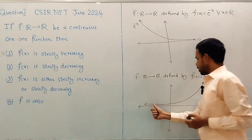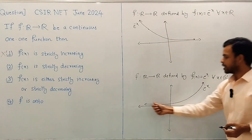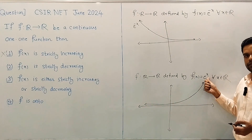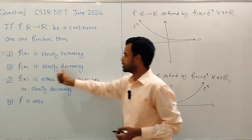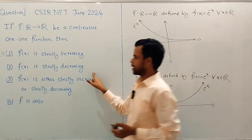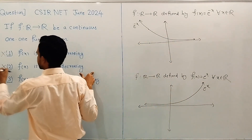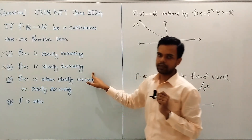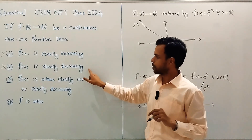But from its graph, it is also clear that it is a strictly increasing function. Option 2 says f(x) is strictly decreasing, so this option is discarded because it is not necessarily true.